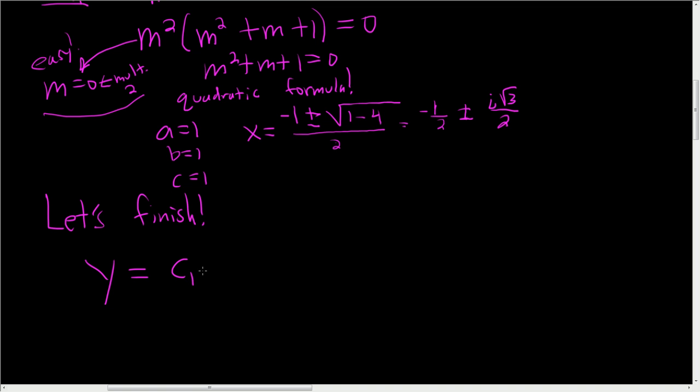So we have c1 e to the 0x plus c2x e to the 0x. You have two terms because it's multiplicity 2, plus: